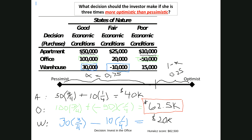One important thing to point out: these values are associated with the best outcome and the worst outcome — not the worst state of nature. You make this decision weighted based on the worst outcome. In this case, for the apartment, the worst outcome is $10,000, not the $15,000 that would have come from the worst state of nature. It's $10,000 that is the worst outcome if you invest in that warehouse.